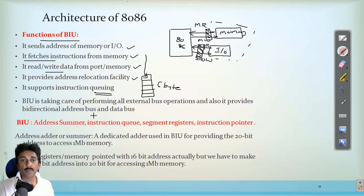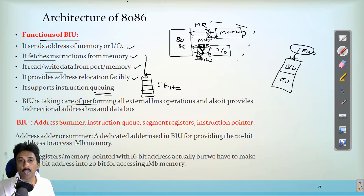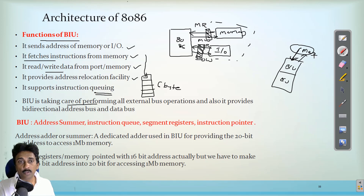The bus interface unit is the first part of the microprocessor; the microprocessor contains a bus interface unit and an execution unit. The memory interface is connected directly to the bus interface unit. The bus interface unit takes care of all external bus operations and provides a bidirectional address and data bus. The address will be sent from the bus interface unit to the memory devices, and bidirectional address as well as data will be exchanged between the memory and the microprocessor.